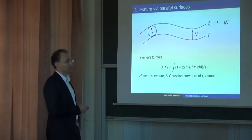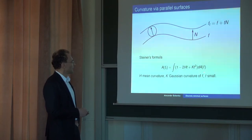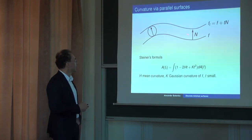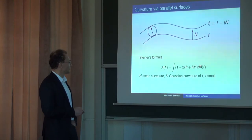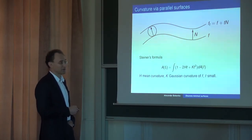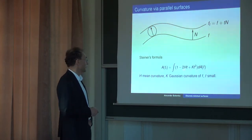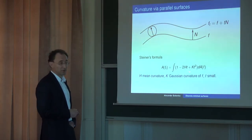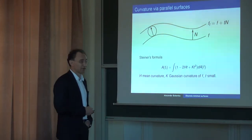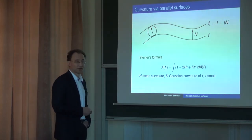You compare the areas of your original surface with the area of this parallel surface. If you consider how the area changes infinitesimally, you see that the area element of your original surface f and the area element of the obtained parallel surface f_t are related by Steiner's formula. There is a coefficient between these infinitesimal areas, and this coefficient turns out to be quadratic with respect to the shift parameter. This is a theorem, and the coefficients in this Steiner formula are the mean curvature and the Gaussian curvature. The idea is to discretize this Steiner formula and see what notions of discrete curvatures we obtain.